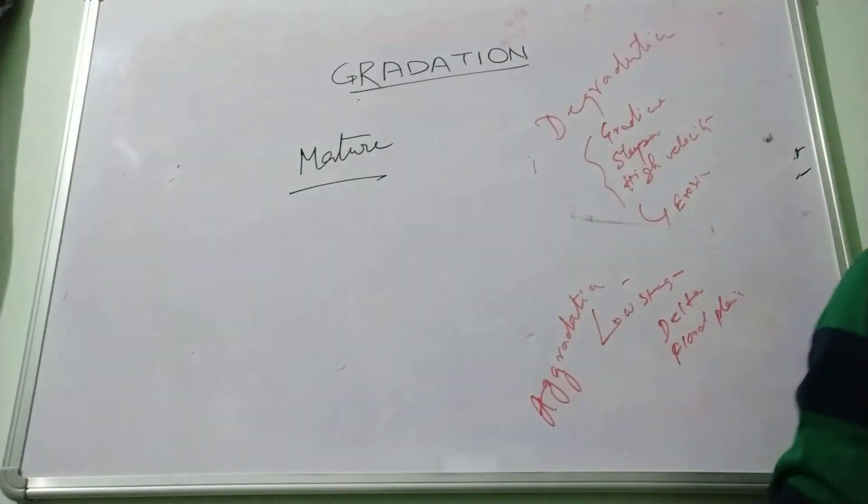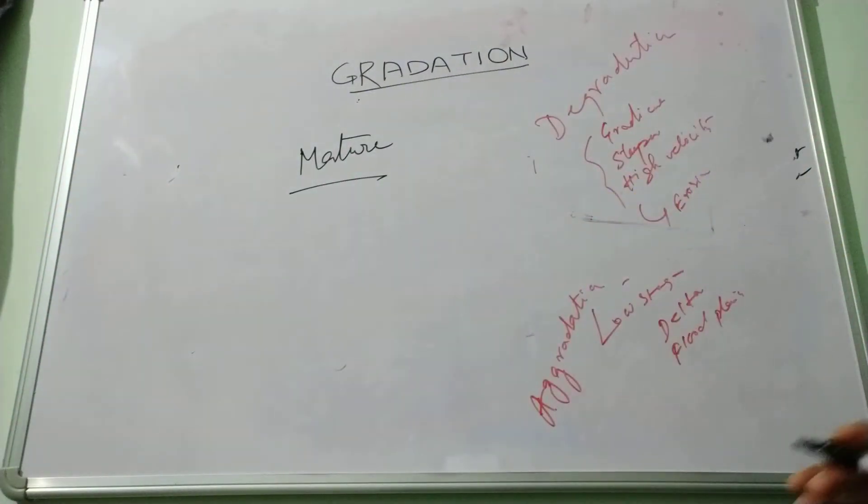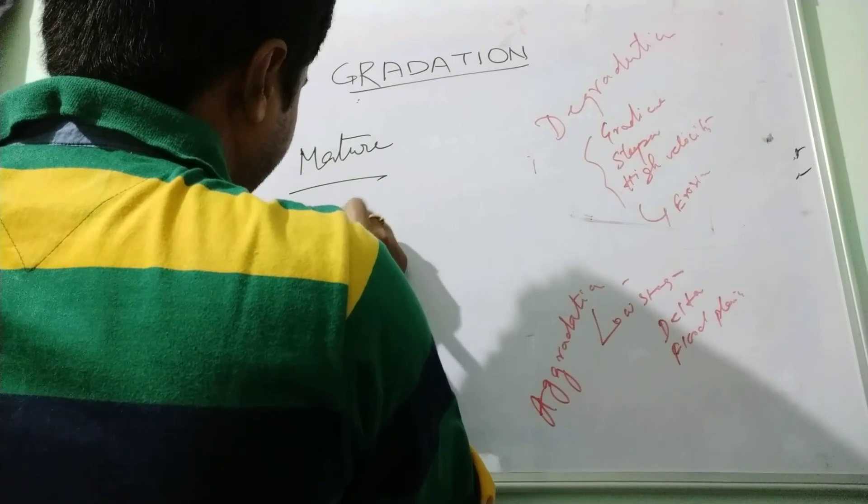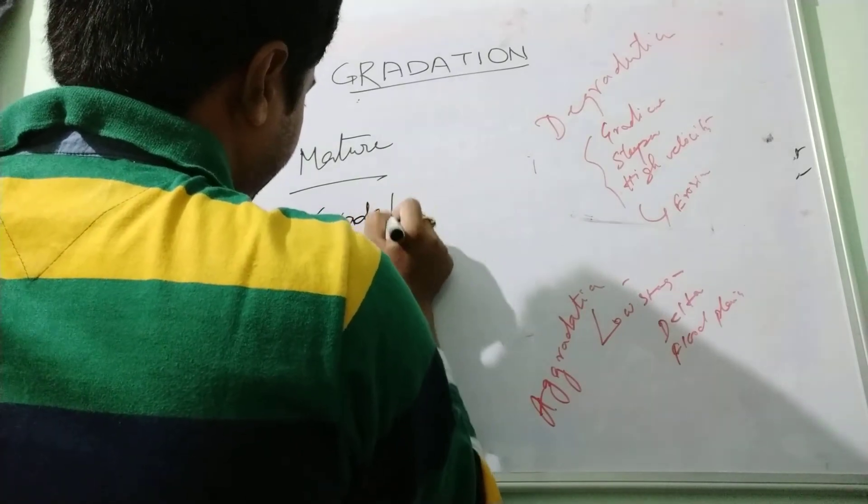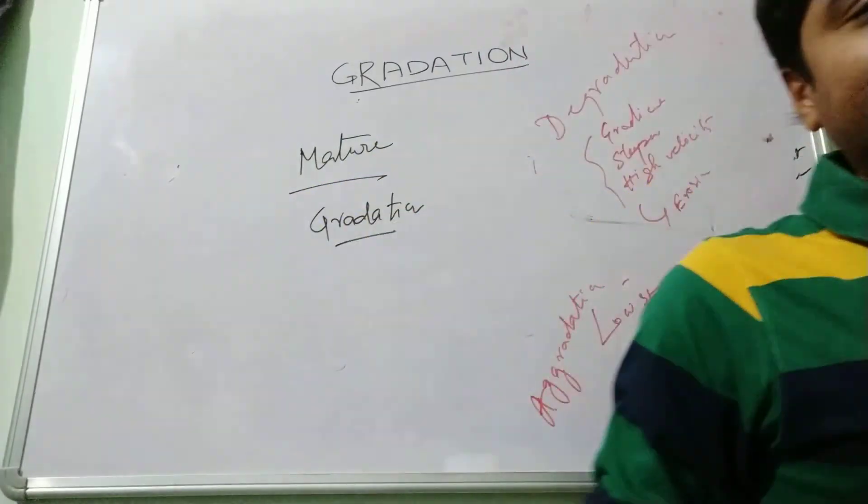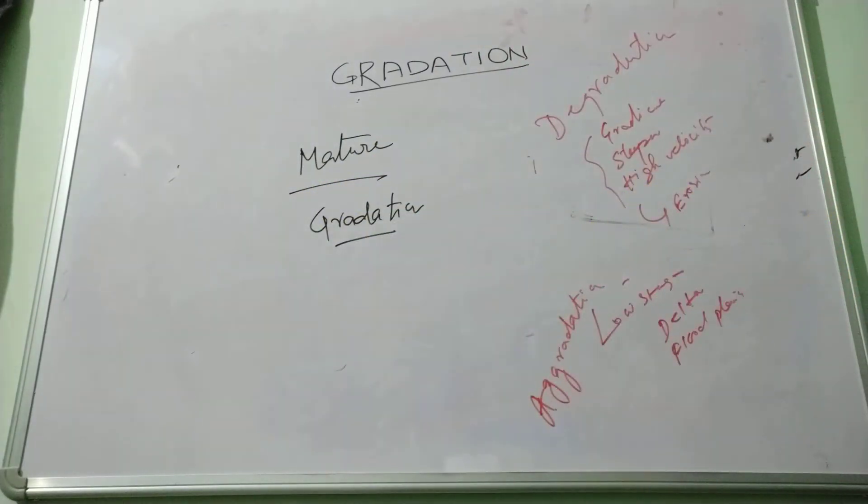In the mature stage, what is happening there? Erosion and deposition are almost equal. And this process is known as gradation. In this way, gradation, degradation, and aggradation, these three processes are closely interrelated. And the geomorphic agents help in this degradation and aggradation to comprise the gradation process.